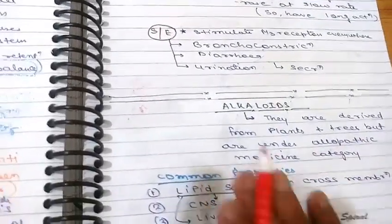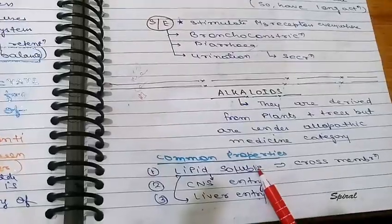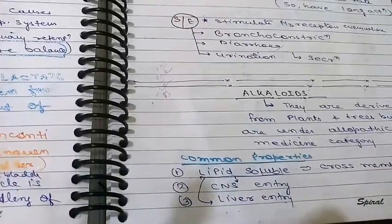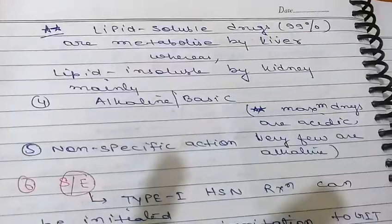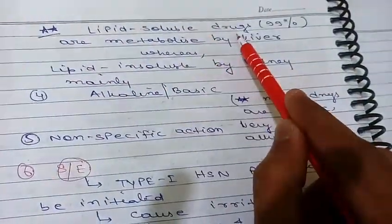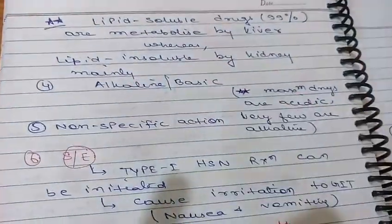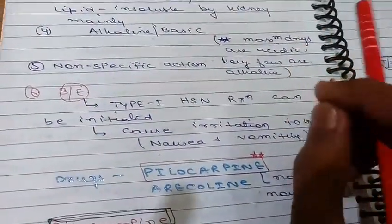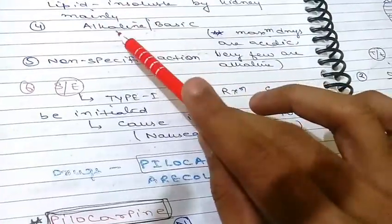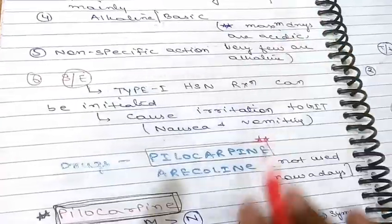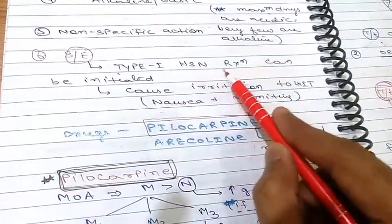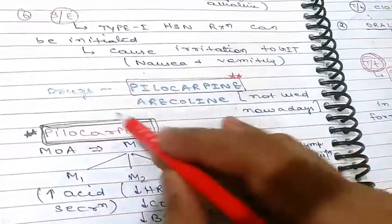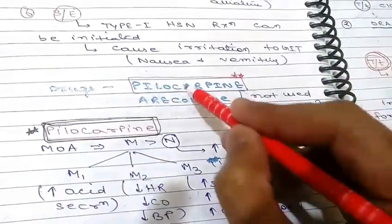Common properties of alkaloids: they are lipid soluble, so they can cross membranes and enter the CNS and liver, undergoing hepatic metabolism. About 90% of lipid soluble drugs are metabolized by the liver, whereas lipid insoluble drugs are eliminated by the kidney. Alkaloids are alkaline or basic in nature — most drugs are acidic, but alkaloids are one category that is alkaline. They also have non-specific action. Side effects include type 1 hypersensitivity reactions and GIT irritation causing nausea and vomiting.